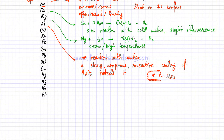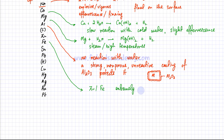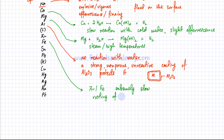Moving further down the reactivity series to zinc and iron — their reactions with water are extremely slow, taking weeks, months, or even years. For example, if you throw an iron chair into a swimming pool, the reaction will take a very long time. In the case of iron, this is called rusting. Rusting requires moisture and air containing O₂, and it is a very slow, gradual process.